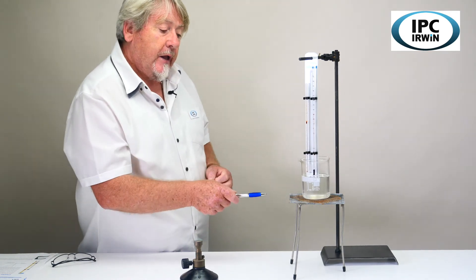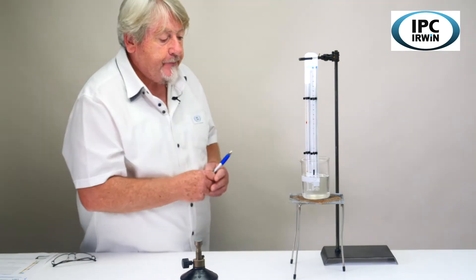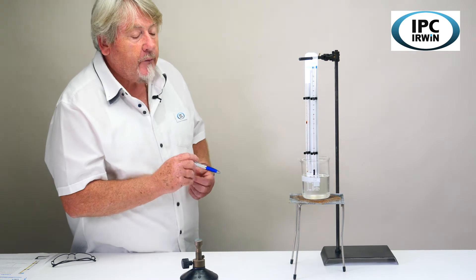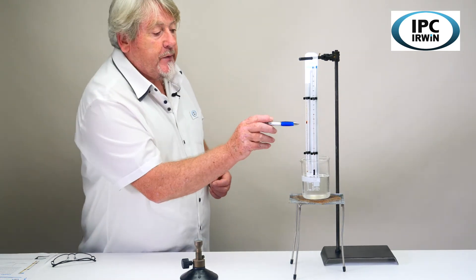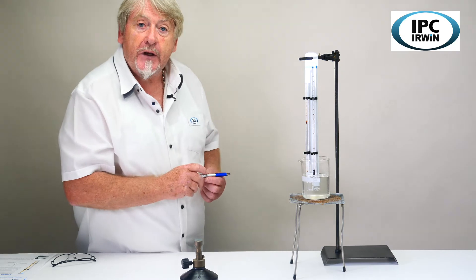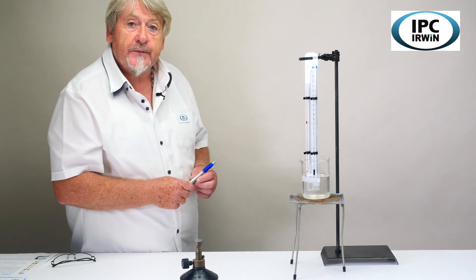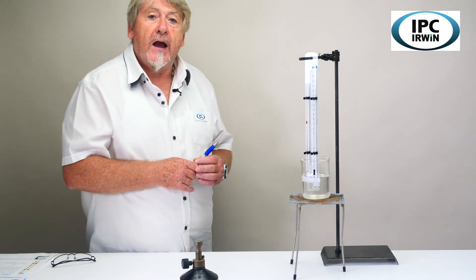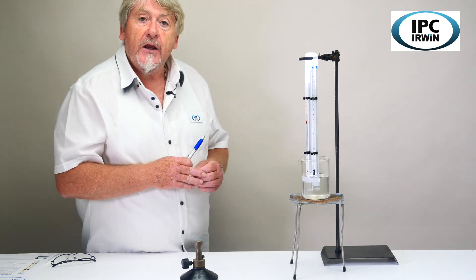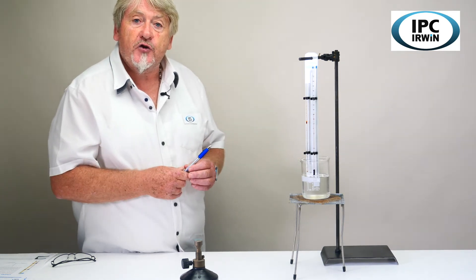Then we're going to apply heat to the water in the beaker and take a reading of the bead's position and temperature every 30 seconds. We'll plot that on a graph, and you should be able to see a straight line.